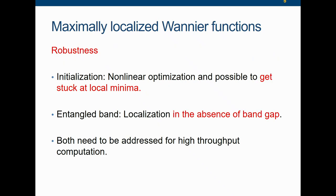Robustness issues have been consistently observed in this community for various systems. Robustness can be interpreted from two directions. One is the so-called initialization problem — the optimization problem is highly nonlinear and it is entirely possible to get stuck at a local minimum if the initial starting point is not correct. The second is the robustness with respect to the band gap, that is the case of the entangled band. If you directly do the localization for the entangled band system, it won't work directly, and you have to generalize these Wannier functions. In practice, for the entangled band, it becomes more challenging to tune these parameters. Both issues need to be addressed for high-throughput computation.